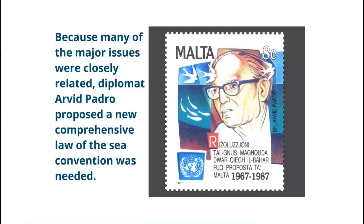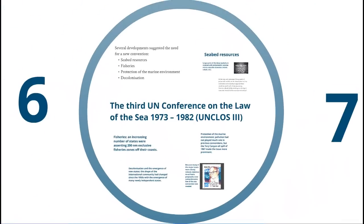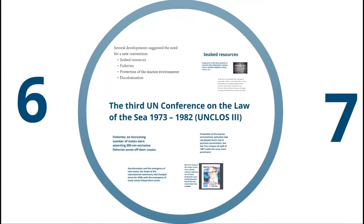Malta's ambassador to the United Nations, a diplomat called Arvid Pardo, argued that many of these issues are closely related — we're not going to reach agreement on one without reaching agreement on the other. Therefore, we need to address all of these issues in a package so we can negotiate trade-offs between them. We're going to need a new Law of the Sea convention, and that's how we get to the third UN conference.